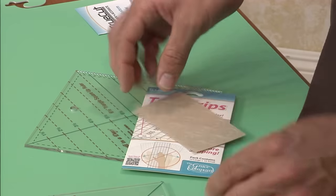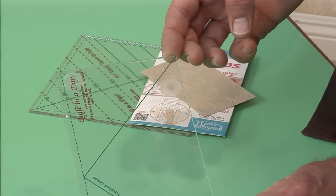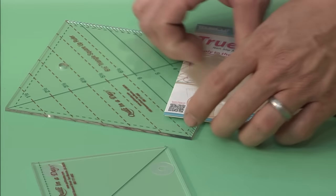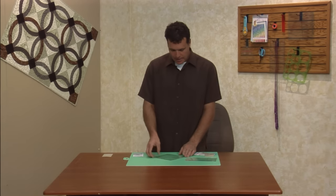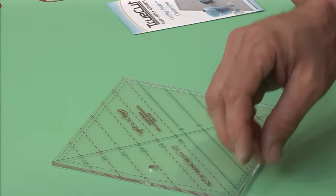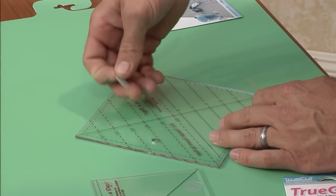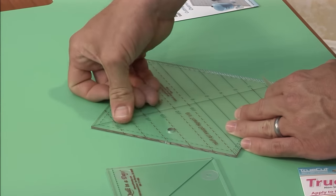You apply them to the back of your ruler. So I'm going to put it on this six and a half triangle square up ruler. I'll turn the ruler over and then I'm going to peel these little dots off and put them on.